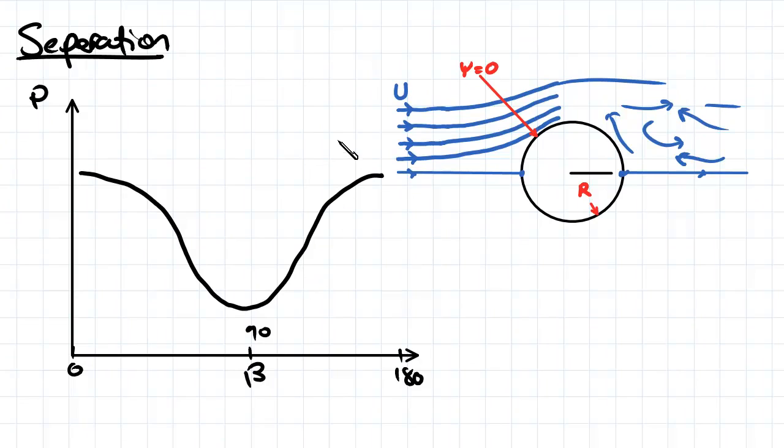So unlike this theoretical curve here, the actual curve that we get looks a little bit more like this. So we come down, but we don't actually reach that same pressure again. And that's due to this separation region that's occurring here.